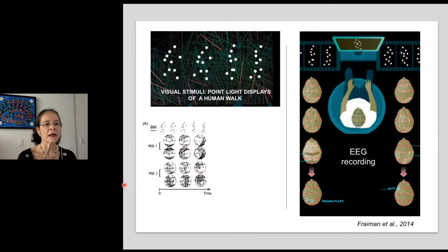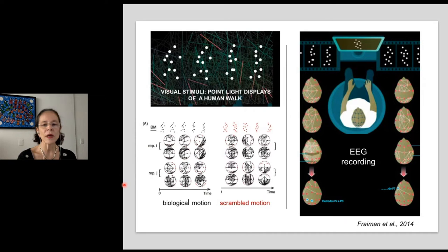We can compare the graphs of activity retrieved during the visualization of biological versus scrambled motion, a condition in which the position of the point light is interchanged, breaking down the form of a human body motion.